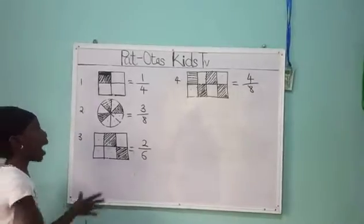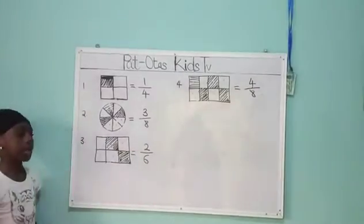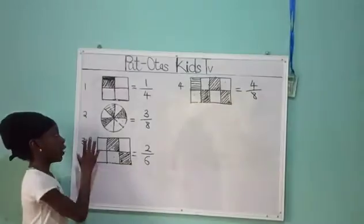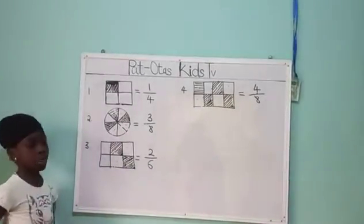Number 2, I have 3 over 8 and a circle here. First of all, I am going to count the parts in this circle.